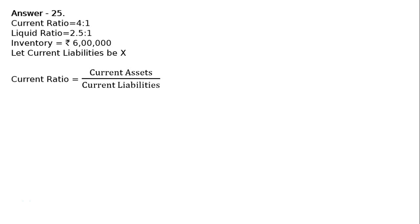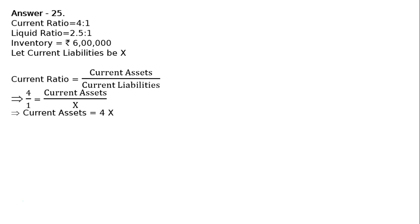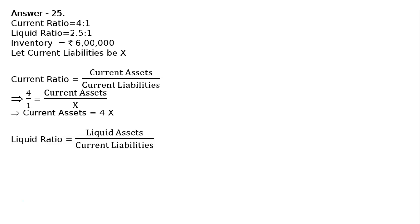Current ratio is equal to current assets upon current liabilities, which implies that 4 upon 1 is equal to current assets upon X, which implies that current assets is equal to 4X.